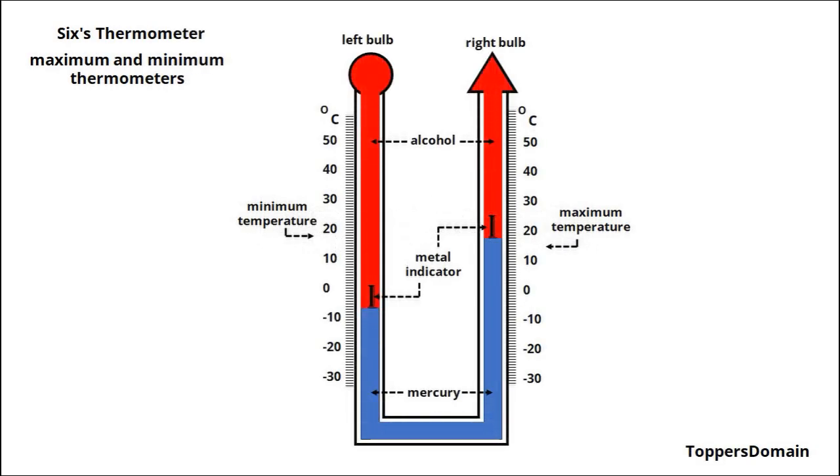The Six's thermometer is an ingenious combination of maximum and minimum thermometers. It is designed to accurately record the highest and lowest temperatures within a specific time frame.